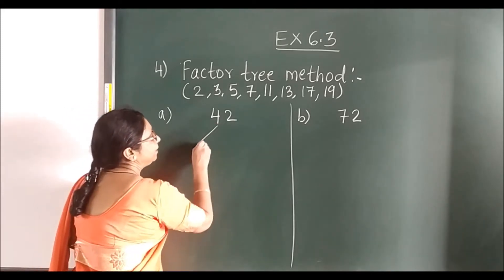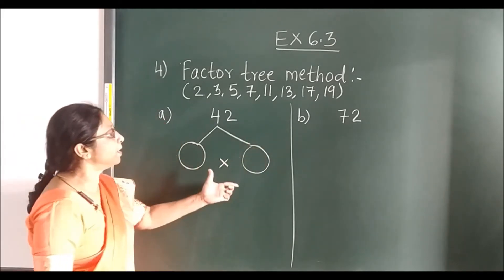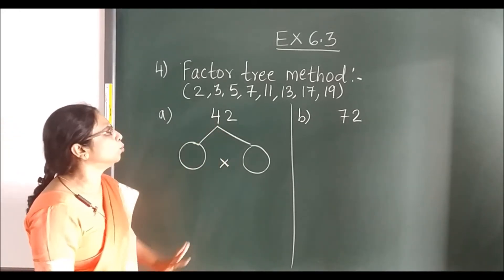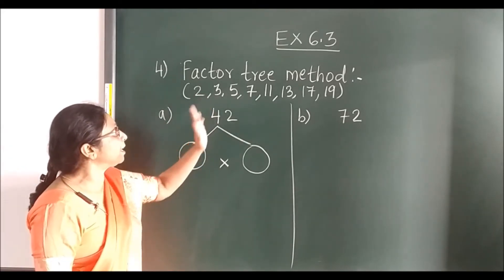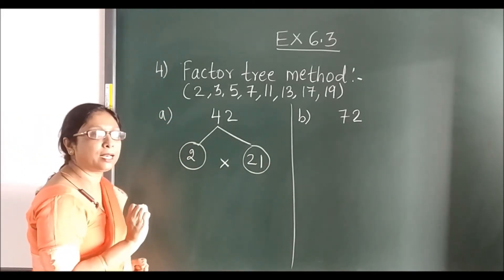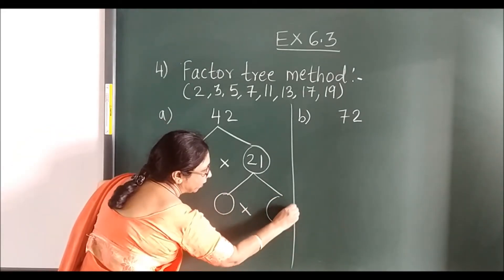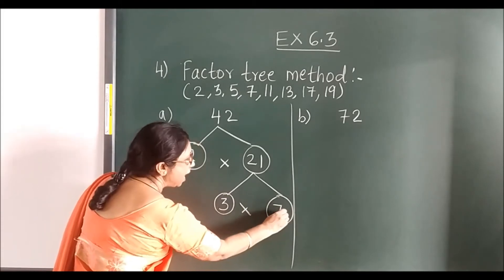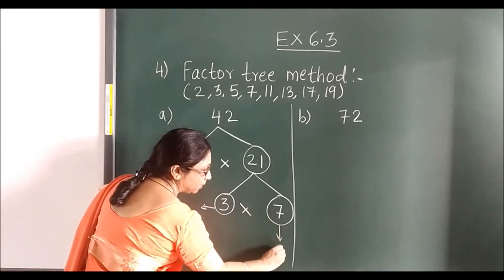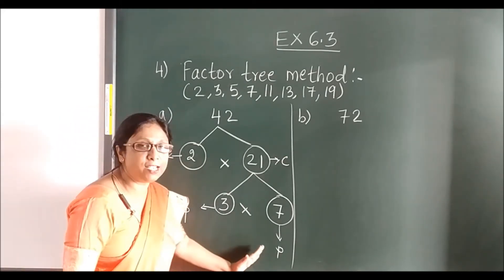Now 42. Split 42 in such a way that one number is prime and the other is composite — meaning it comes in other tables too. 42 comes in the 2 times table: 2 and 21. Then you can split 21 further: 3 and 7. These numbers 3 and 7 are prime numbers. 2 is also a prime number. The composite number is 42 — your final numbers will always be prime numbers in the factor tree.